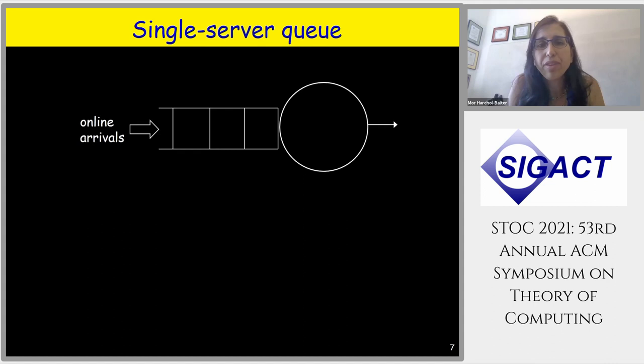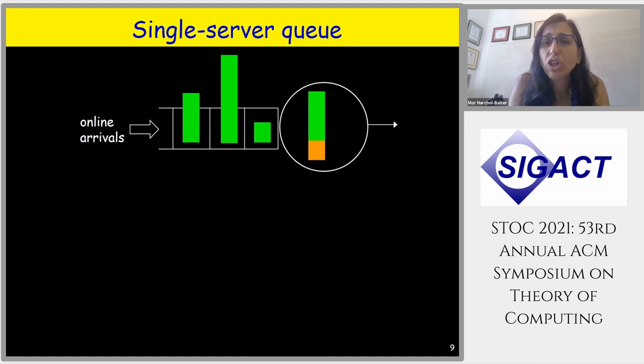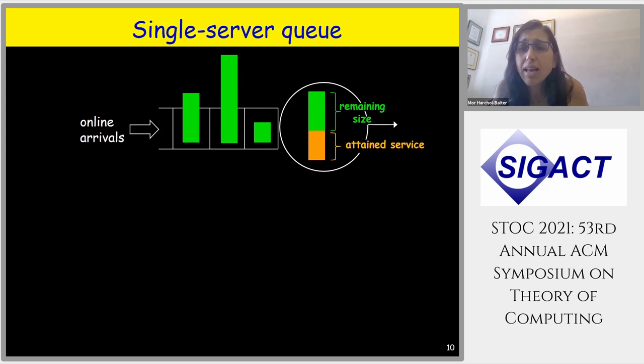Let's start with a single server queue — a server and a queue where jobs arrive over time. When a job arrives, it starts getting worked on. Other jobs arrive while the job in service continues to get worked on. Jobs have different sizes, some big and some small. The orange part is the attained service — how much work has been done so far — and the green part is the remaining size, what's left to do on the job.